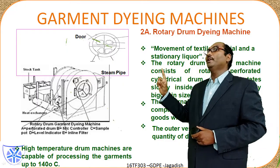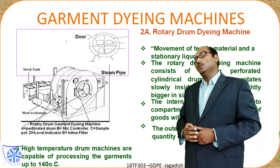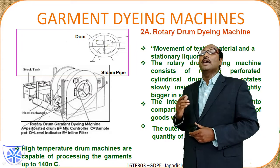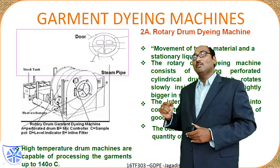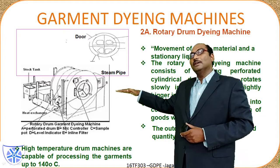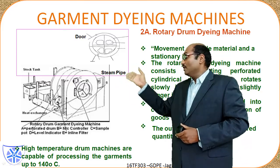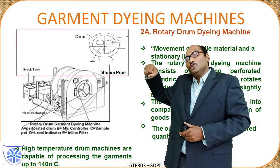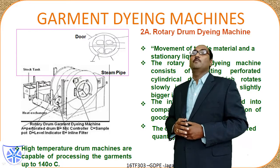This is a rotary drum dyeing machine — the other major category. In this type, the movement of textile materials takes place while the liquor is stationary. The bottom part up to 40% of the drum consists of liquor, and the drum has perforations. As it keeps rotating, one segment comes into contact with the liquor, gets immersed, and is then raised — so a continuous cycle of immersion and raising takes place.